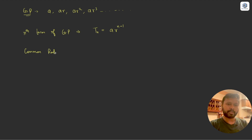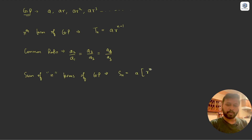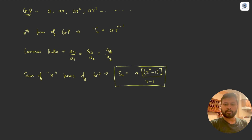To find the common ratio, it's very simple — you just divide two adjacent terms: a₂/a₁, or a₄/a₃, all of them will give you the common ratio. To find the sum of n terms of a GP, the formula is: Sₙ = a·(rⁿ − 1) / (r − 1). It looks a little complex but it's very simple to remember — in the numerator it's a·(rⁿ − 1) divided by (r − 1). You have to remember this formula, it's very important.